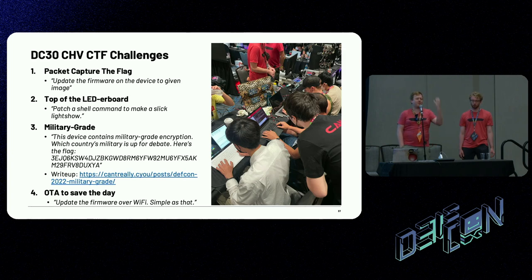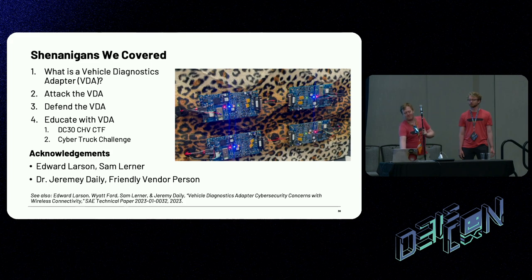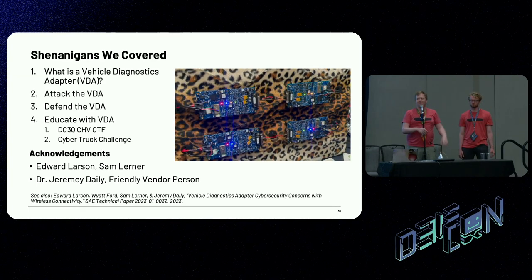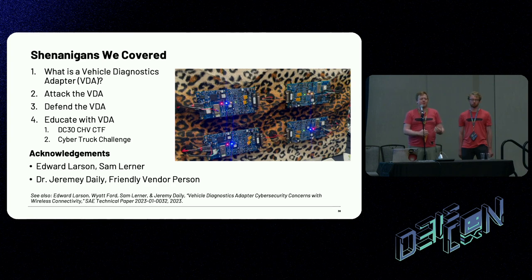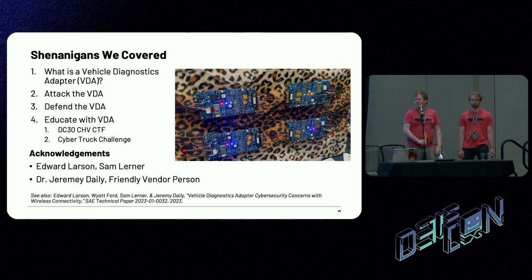Challenge four was OTA to save the day — we had the Wi-Fi access points turned on and you had to do the firmware update procedure over the air. To recap: we talked about what VDAs are, showed how it's relatively straightforward to modify the firmware on them and attack it, and discussed what that implies for the industry. We talked through ways binary modifications can be made to harden the image without going to the end manufacturers, and how real-world research can be converted into challenges to educate both students and push people out of their comfort zone. This was the first VDA that appeared at the Car Hacking Village CTF. We want to acknowledge Edward and Sam, Jeremy, and the friendly vendor person for helping out with this.